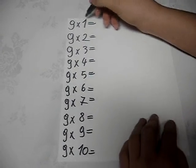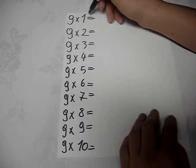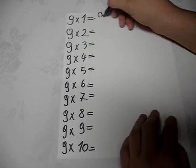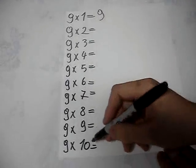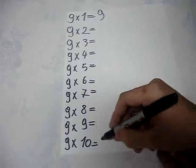First, you have to write how much is 9 times 1, and everyone knows it is 9. Then you have to write how much is 9 times 10, and you know it is 90.